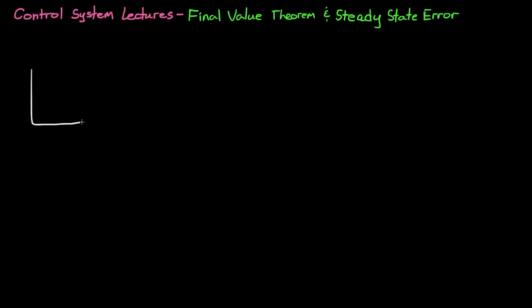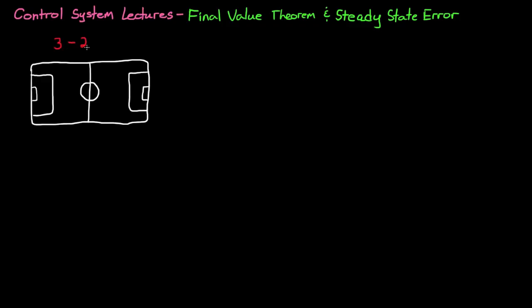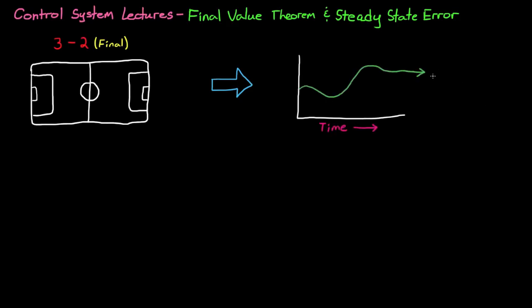Now the final value of a function is exactly what the name implies. If you were talking about a soccer match and asked what the final score was, you'd really be asking what was the score at the end of time, or after time ran out. This is analogous to the final value of a function, where you ask what is the value of the output when time runs out, or at time equals infinity. Of course, you can't really say when time equals infinity — that's unsolvable. So you say, what does the final value approach as time approaches infinity?